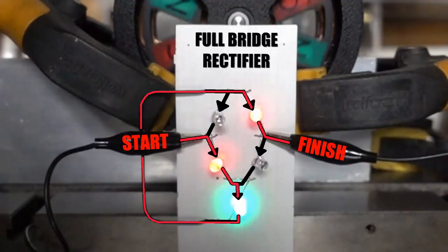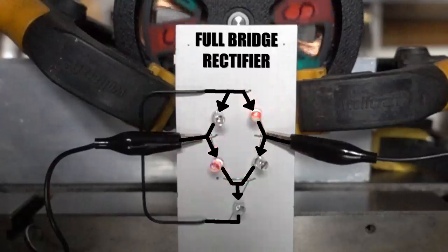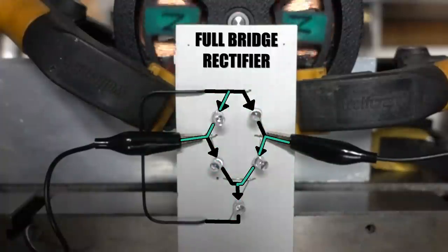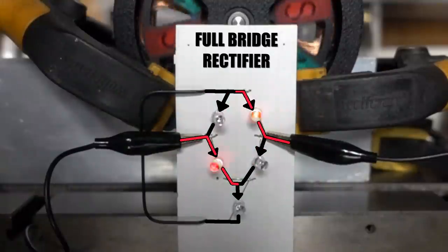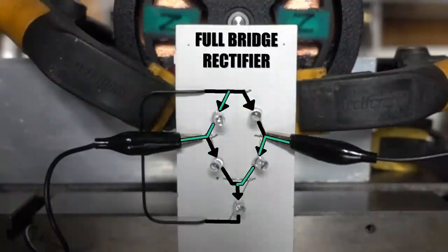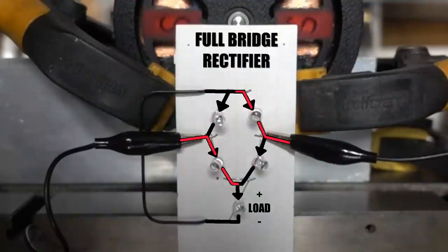When the alternating current switches directions, switch start and finish and run the maze again. Just like before, the current follows our path through the diodes, this time lighting the red LEDs instead. But check it out - the green LED at the bottom is also lit just like before. We just ran current from opposite directions through the same LED in the same direction. That's the magic of a rectifier. Allowing it to cycle for a bit we can see what the action of a full bridge rectifier looks like. The green LED at the bottom is called the load where we would place our battery or whatever we want to power with direct current.